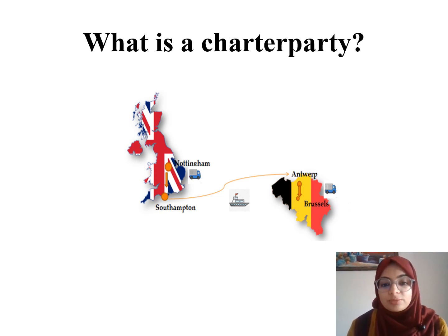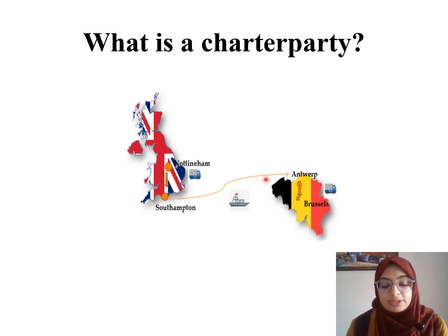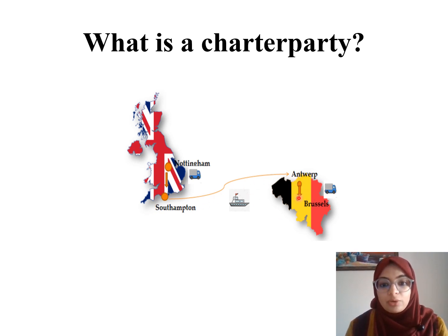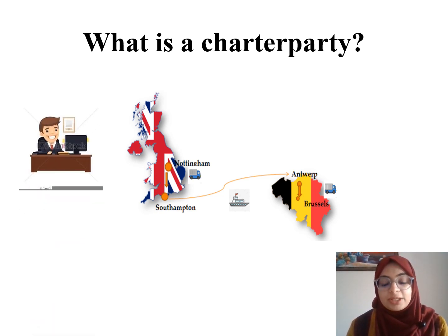Depending on what incoterms I have selected with my seller, either the seller is responsible for shipping the goods from Southampton to Antwerp, or from Nottingham to Southampton. If I select ex-works, the seller is only responsible for making the goods available at his warehouse, and I as the buyer have to take up the responsibility of shipping. So the shipper can be the seller or the buyer depending on your incoterms.